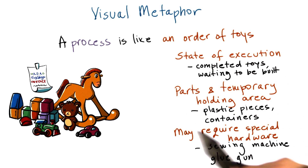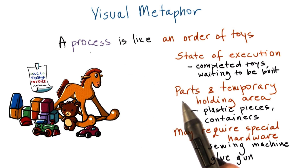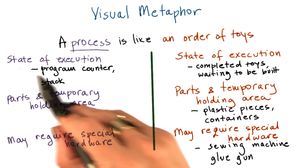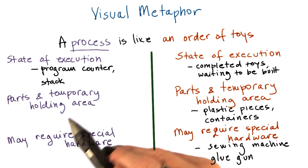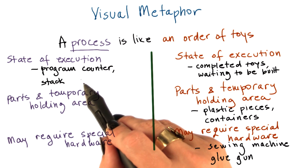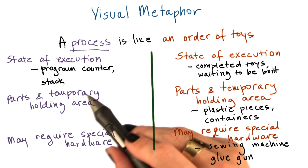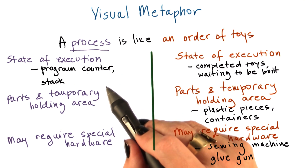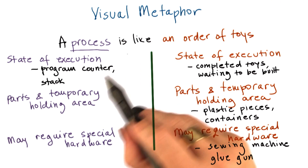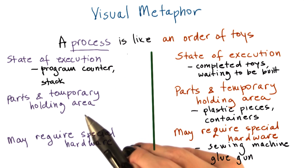So how does all of this compare to a process in an operating system? Well, a process also has its state of execution, described with the program counter and the stack pointer. All this information is used by the operating system to decide how to schedule the process, how to swap between multiple processes, and for other management tasks.